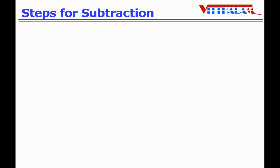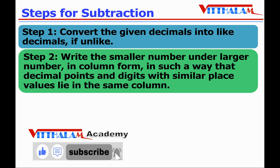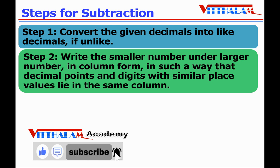Let's begin our learning journey. Here are some steps for subtraction of decimals. First, we will convert the given decimals into like decimals if they are unlike. Second step: write the smaller number under the larger number, that means vertically aligned in column form, in such a way that decimal points and digits having similar place values lie in the same column — that's what we did during the addition of decimals.